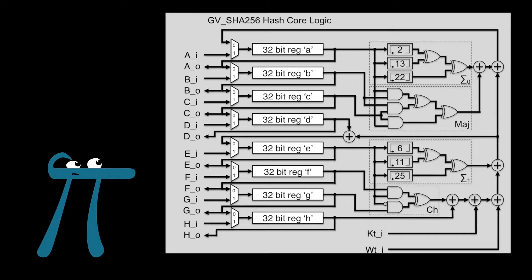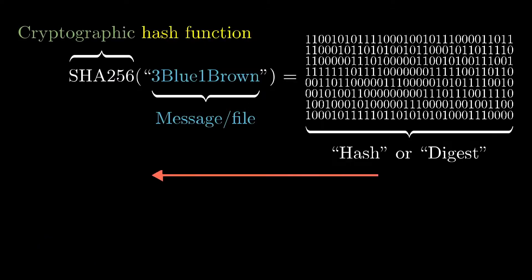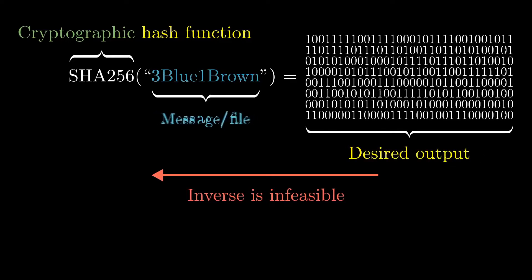Interestingly, there's no cold hard rigorous proof that it's hard to compute in the reverse direction. And yet a huge amount of modern security depends on cryptographic hash functions and the idea that they have this property.